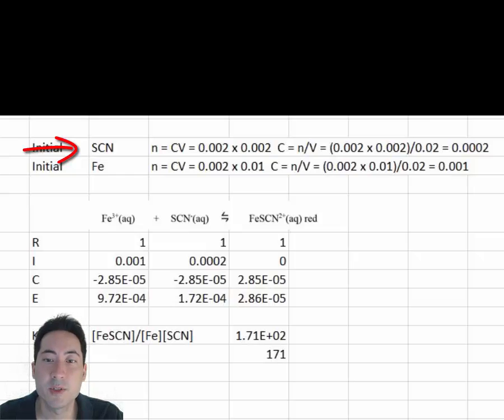We use solution stoichiometry to determine the initial concentration of reactants used in the first unknown. The reaction stoichiometry are all ones in this reaction. We can now write the initial concentrations here.